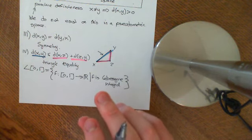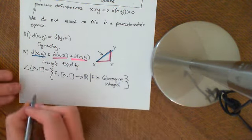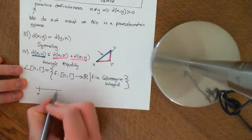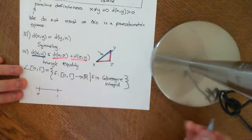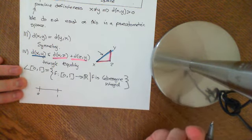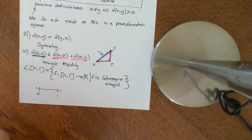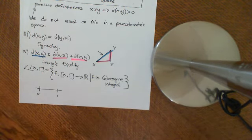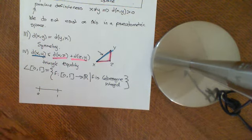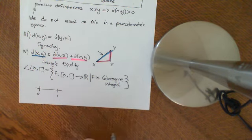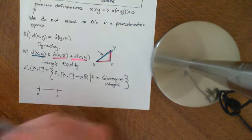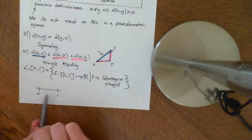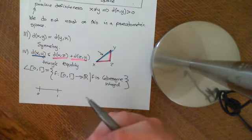Intuitively, you can think of the Lebesgue integral as being almost exactly the same as the Riemann integral for nearly any function you'll have seen. The Lebesgue integral can handle things the Riemann integral cannot. For instance, if you take the set of all rationals on the interval 0 to 1, that set has measure zero — it's just points, whereas the whole interval has a length.